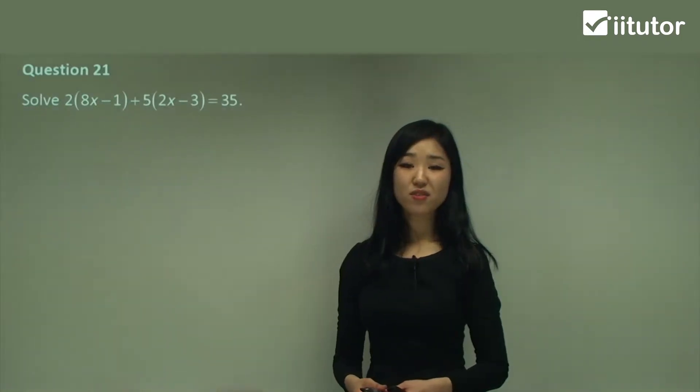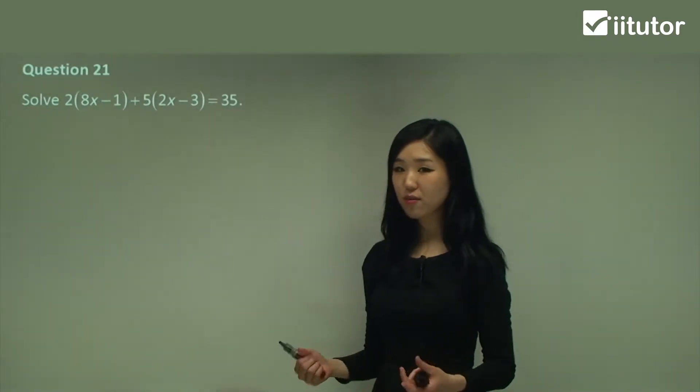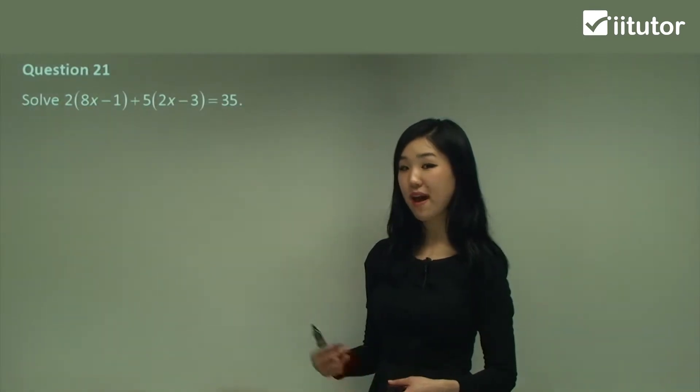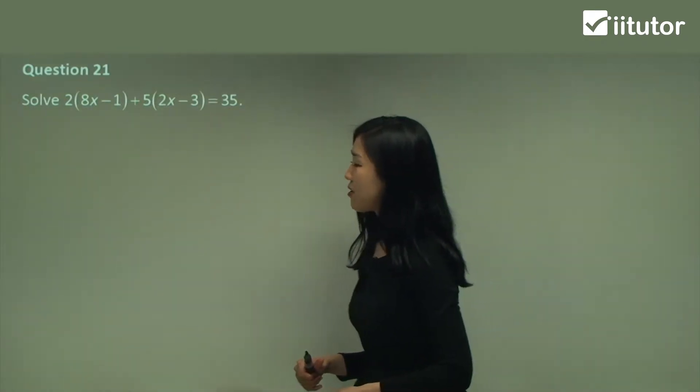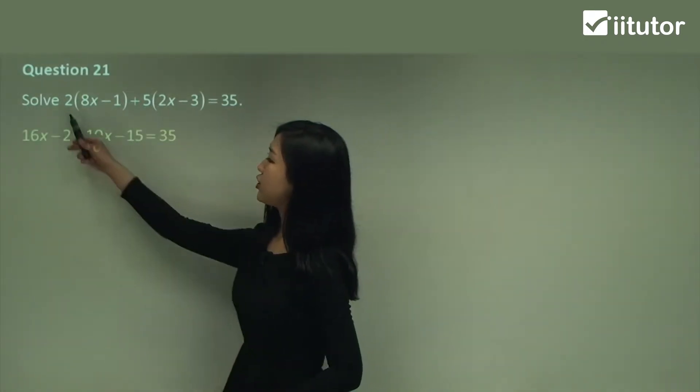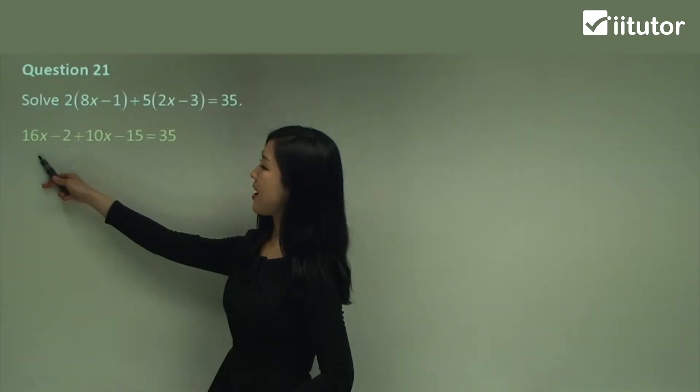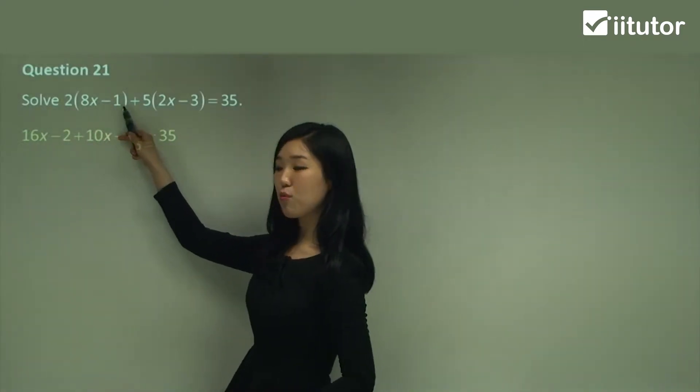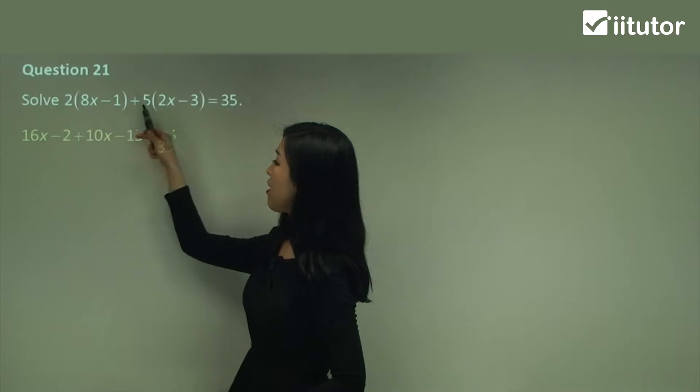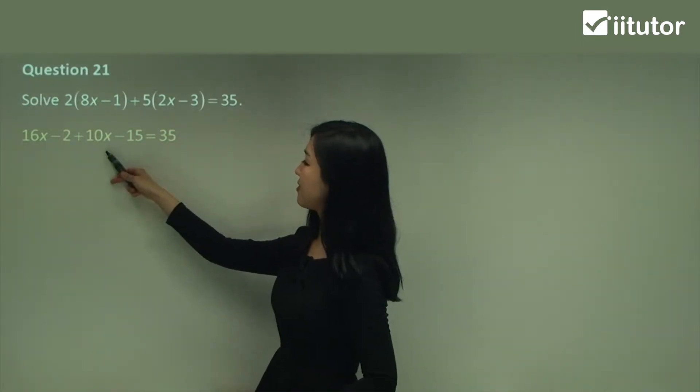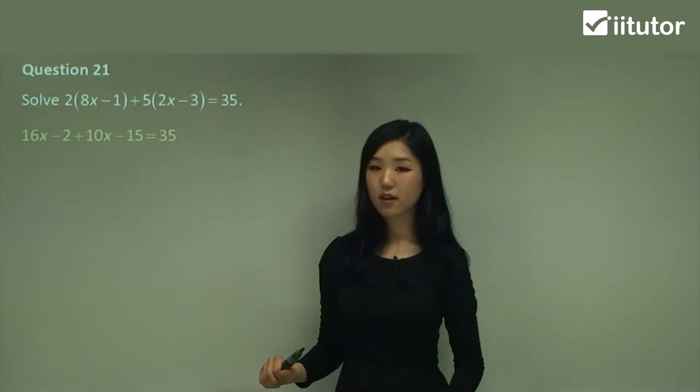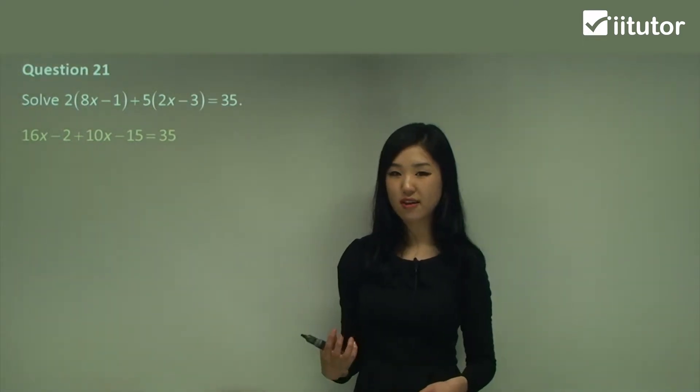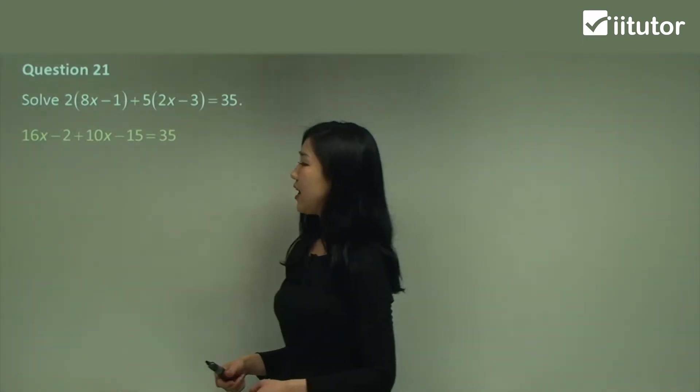Question 21. If you can try this yourself. Try to pause and try to do your own working out and check my answer. But for those who still need a bit of help just keep watching. I'll expand again. Get rid of all those grouping symbols. 2 times 8x is 16x. 2 times negative 1 is negative 2. 5 times 2x is 10x and 5 times negative 3 is negative 15. Make sure you always keep an eye on the signs as well.